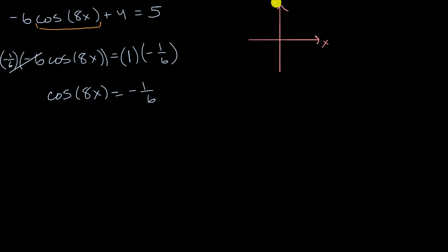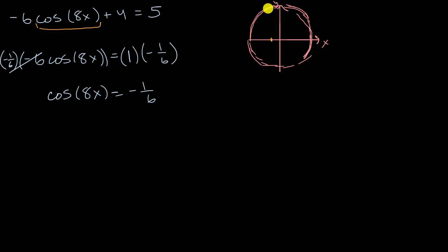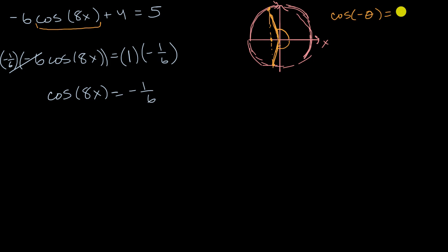So this is our X-axis and this is our Y-axis, and my quick hand-drawn unit circle might look something like this. We want to think about all angles where the cosine gives us negative one sixth. Negative one sixth might be right over here, and there's an angle whose radius intersects the unit circle at that X-coordinate. But we also see there's another place — if we take the negative of that angle, we get the same cosine. That's the identity: cosine of negative theta equals cosine of theta.